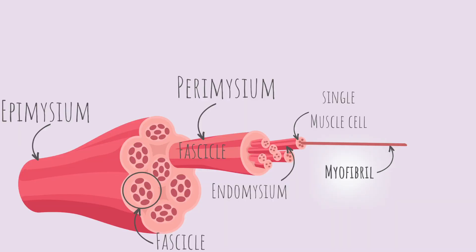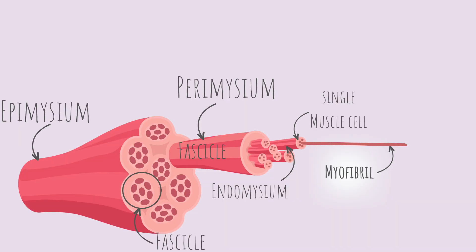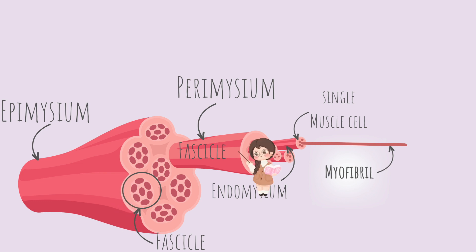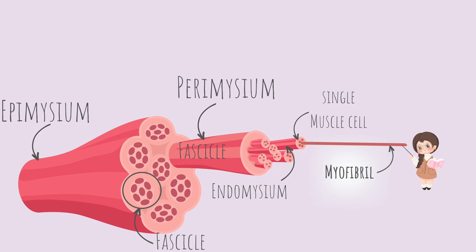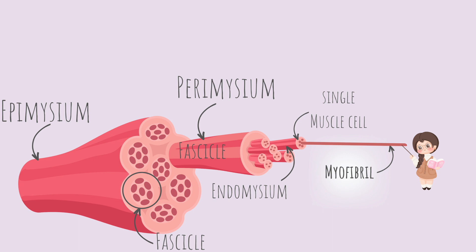Each single muscle cell is made up of multiple myofibrils. So we start off with an entire muscle that is made of fascicles. Fascicles are made of muscle cells or muscle fibers, and the muscle fibers are made out of myofibrils. I want to show you a picture that is a little bit better illustrated in case it might help you visualize the single myofibril that makes up the muscle fiber a little better.